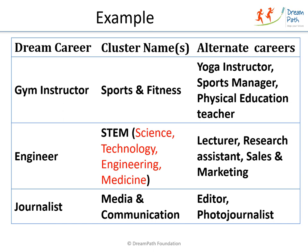Here is an example to help you complete the activity. For the career gym instructor, other career options could be yoga instructor, sports manager, or physical education teacher. For engineer, other career options include lecturer, research assistant, and sales and marketing. For journalist, other career options include editor and photojournalist. Once you complete the activity, circle those careers in your cluster that can be acceptable alternatives to your dream career. You may also need to talk to a professional working in that cluster to get further alternate career options.